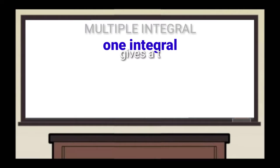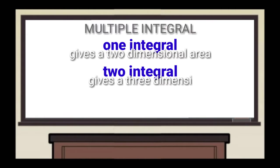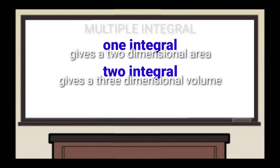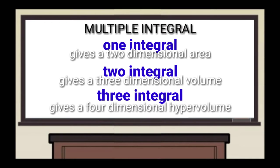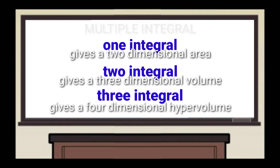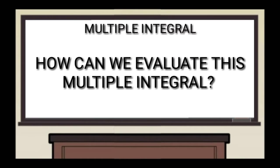Now we know that one integral gives us a two-dimensional area, two integrals give us a three-dimensional volume, three integrals give us a four-dimensional hypervolume. And we know how single, double, or triple integrals are defined. How can we evaluate these multiple integrals?